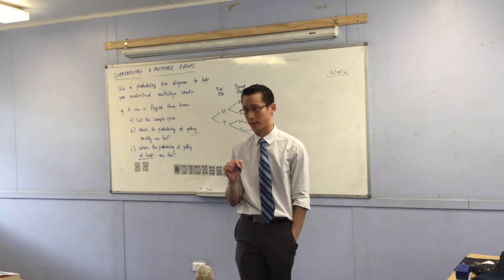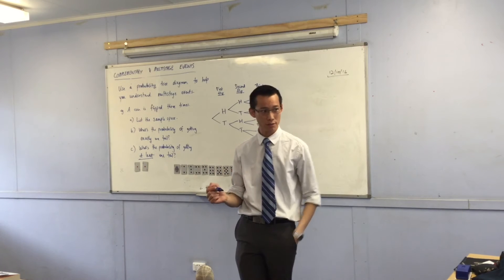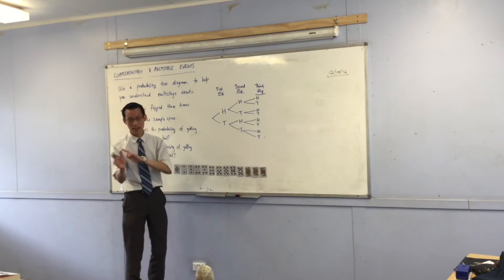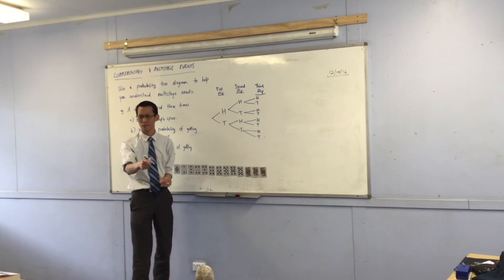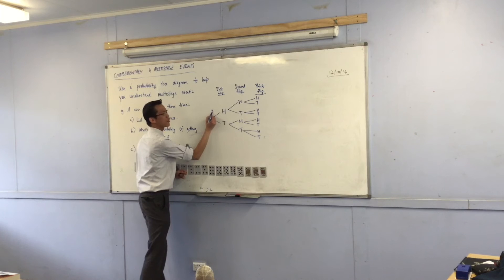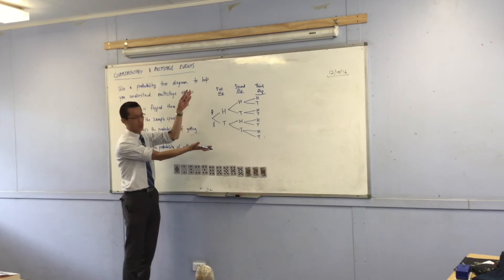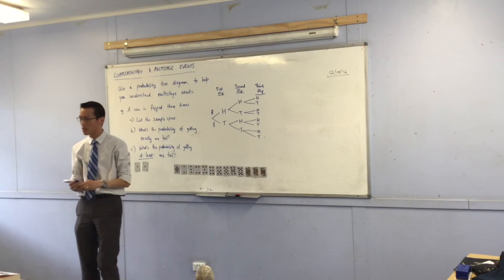If it were twice as likely to get a head than a tail, it should be two-thirds and one-third. Don't write this because this is not actually the case, at least I assume so. I could write two-thirds, one-third, which indicates there's two outcomes, but they're not necessarily equal.